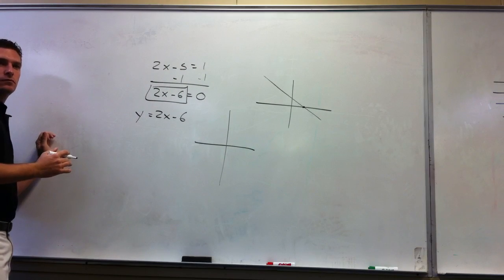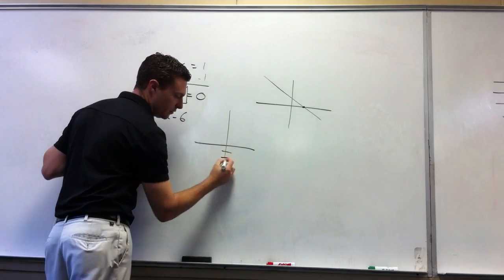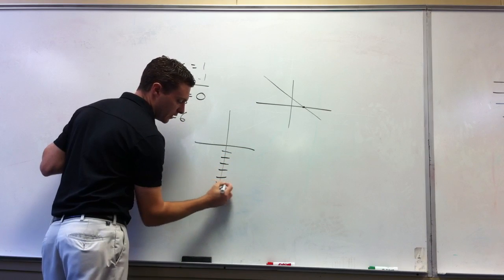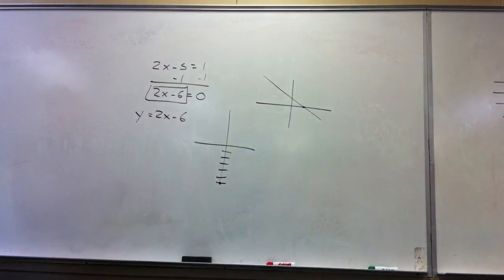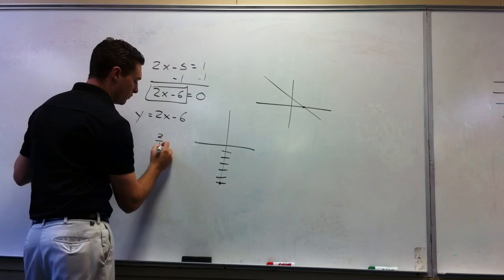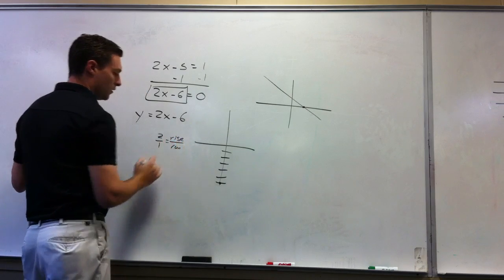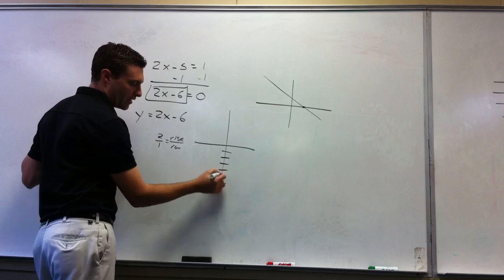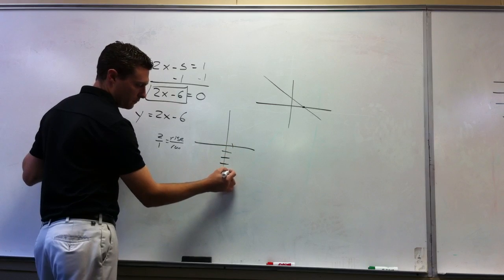The y-intercept is negative 6, so I go down 6 on the y-axis. My slope is 2, which we make into a fraction: 2 over 1. This is rise over run. From here, I rise 2 and run 1.